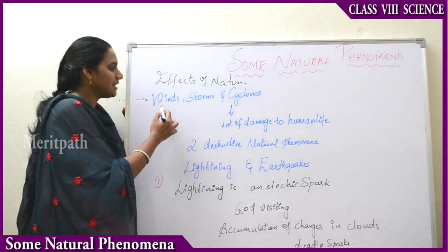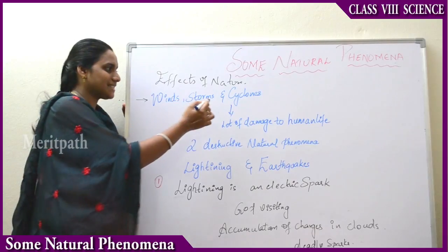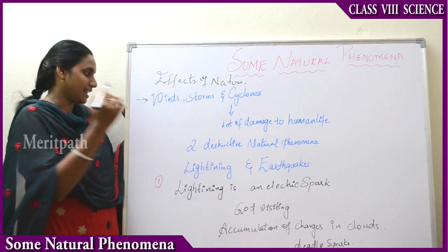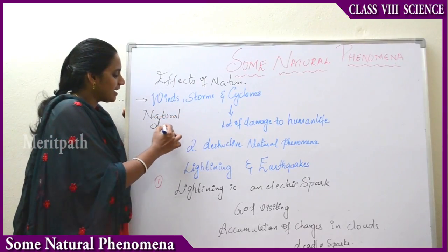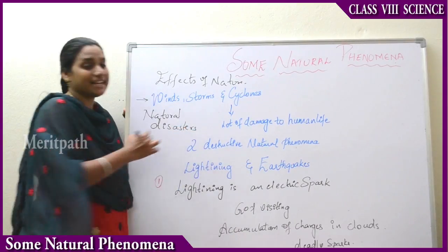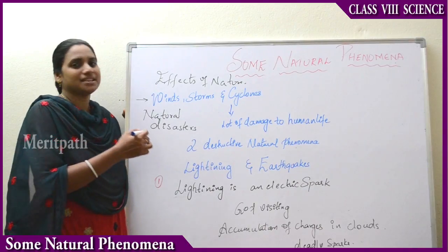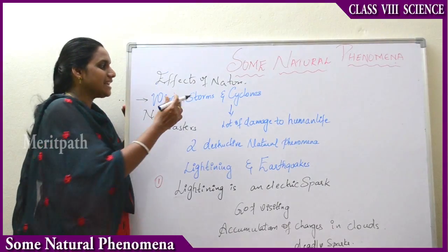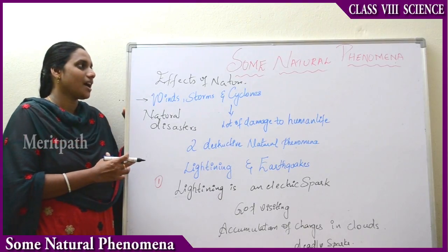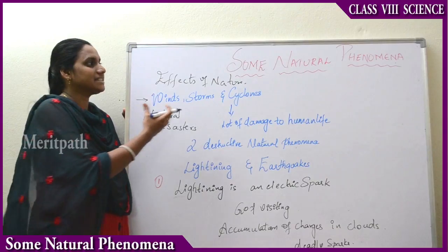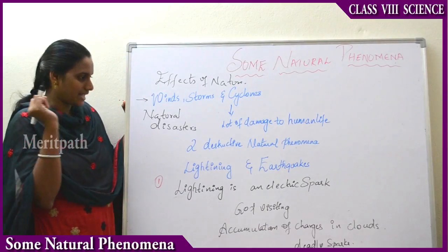Some examples of Natural Phenomena include winds, storms, and cyclones — you may have seen these on news channels. These are also called Natural Disasters because they cause great damage to human life and property. They are unpredictable, occur suddenly, and result in disasters.